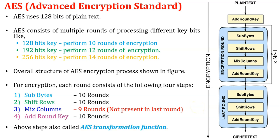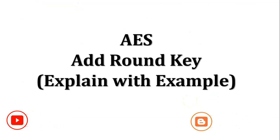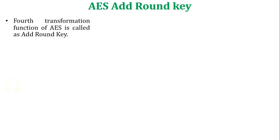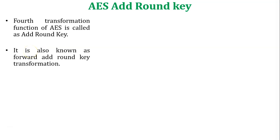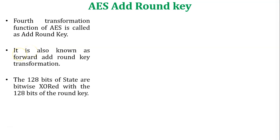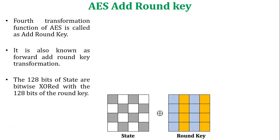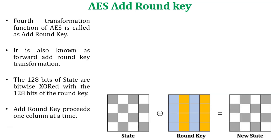In this video, I am going to discuss about AES add round key. The fourth transformation function of AES is called add round key, also known as the forward add round key transformation. The 128 bits of the state are bitwise XORed with the 128 bits of the round key, and it generates a new state array. Add round key proceeds one column at a time.